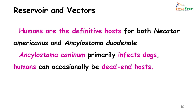For hookworm, man is the definitive host. The larva exists in the soil and also in the human host on its travels to the small intestine. The main form found in humans that causes the most damage is the adult worm. Ankylostoma caninum is the hookworm of dogs; very rarely it may infect humans, who then become the dead-end host, because once the larva enters it cannot spread further in the human body.